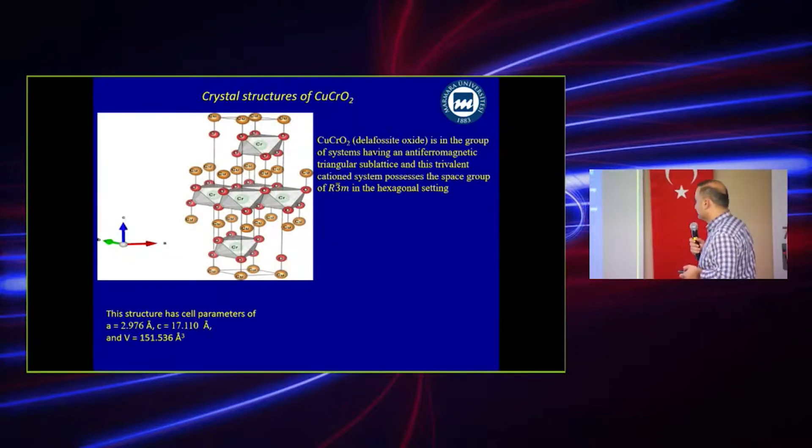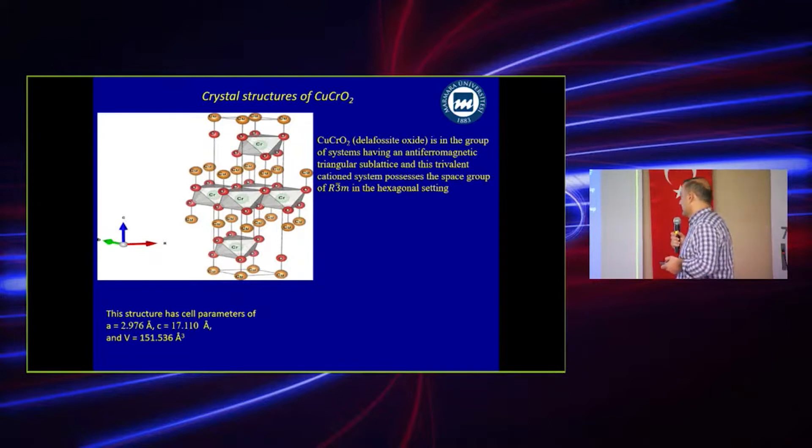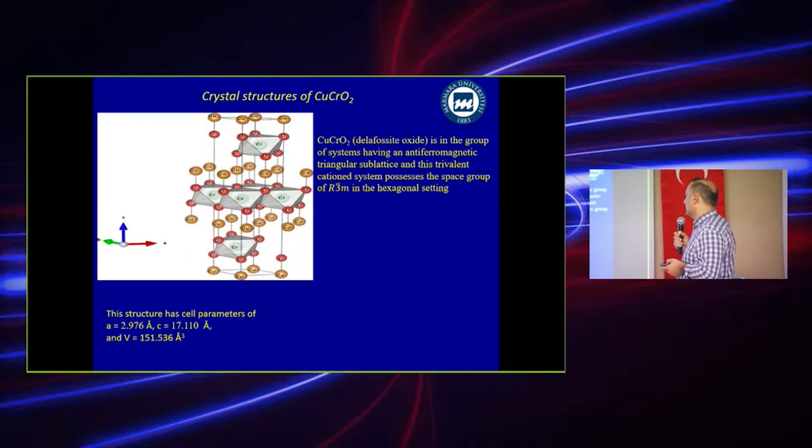The crystal structure of copper chromium oxide is the delafossite oxide. It's in the group of the system having a rhombohedral trigonal soft lattice, and this threefold coordination system possesses the space group of R-3m in hexagonal settings. We calculated the lattice parameters: a = 2.97 angstrom and c = 17.11 angstrom.